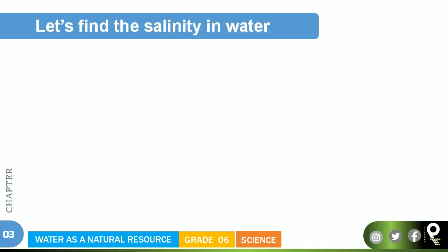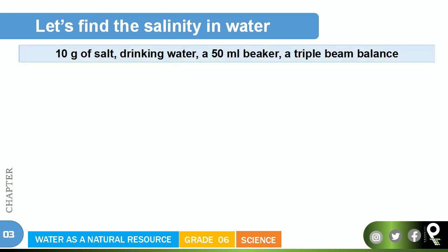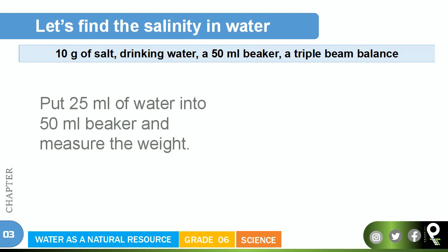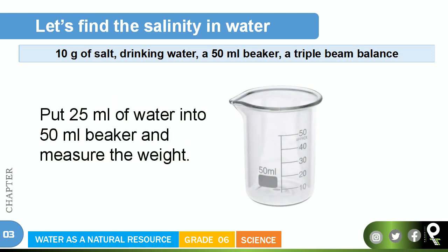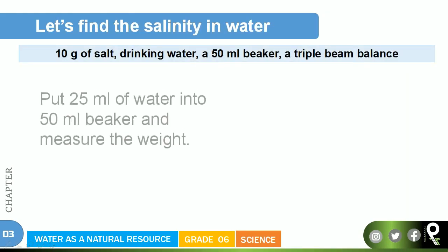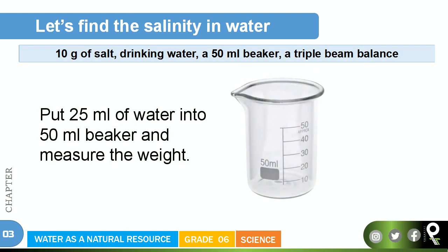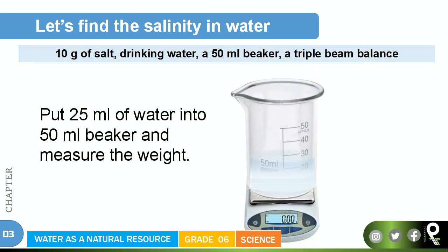Now let's find the salinity in water — salinity and saltiness are the same thing. To do that, we need 10 grams of salt, drinking water, a 50 milliliter beaker, and a triple beam balance. First, put 25 milliliters of water into the 50 milliliter beaker, then measure the weight using the triple beam balance.